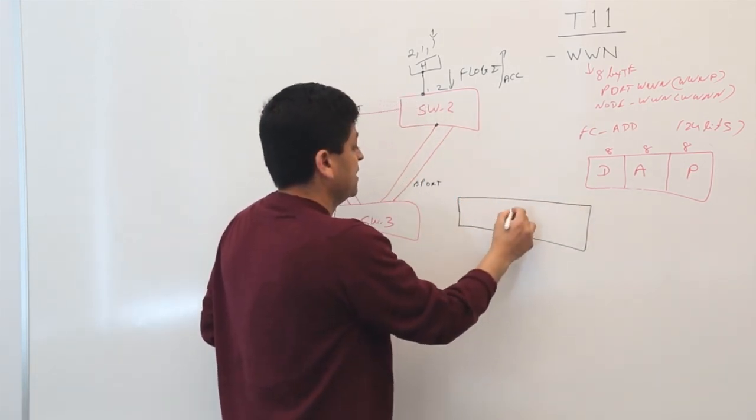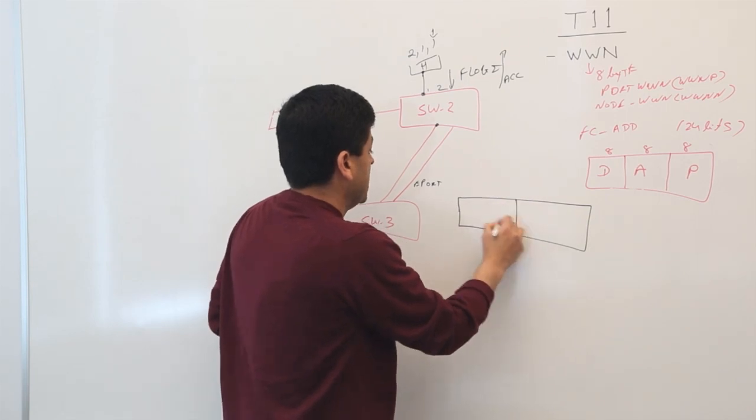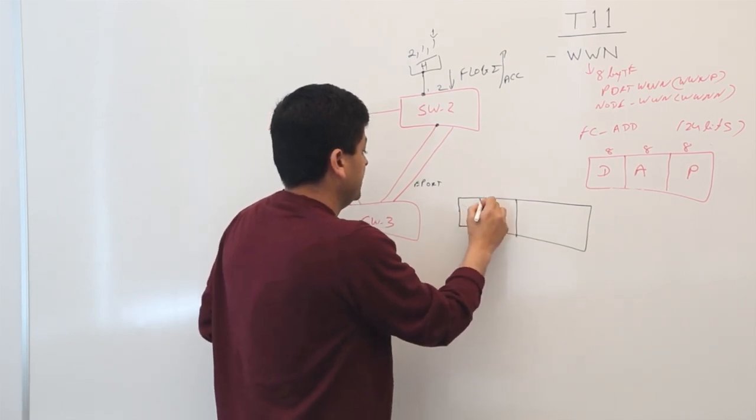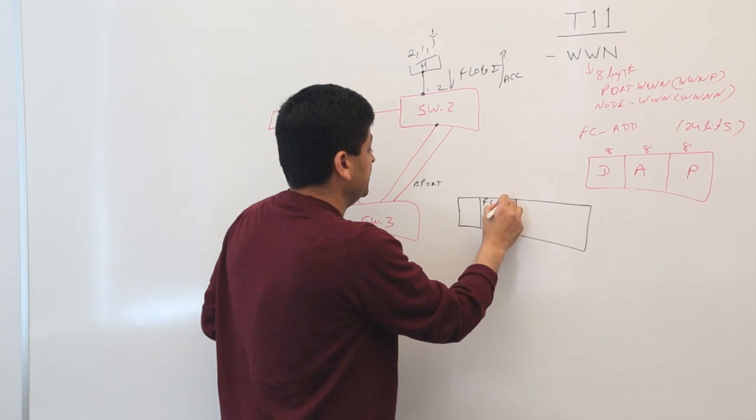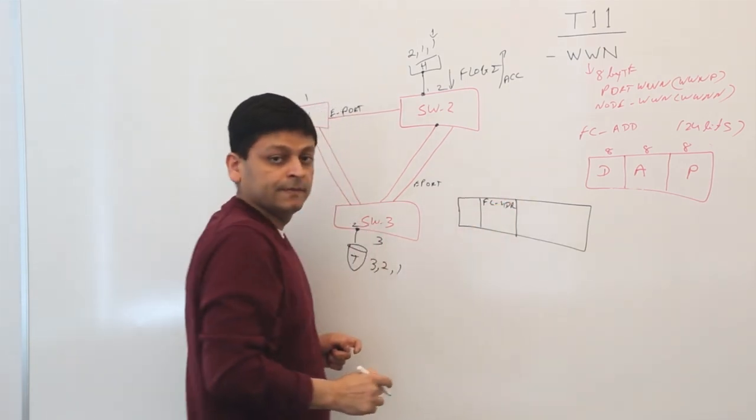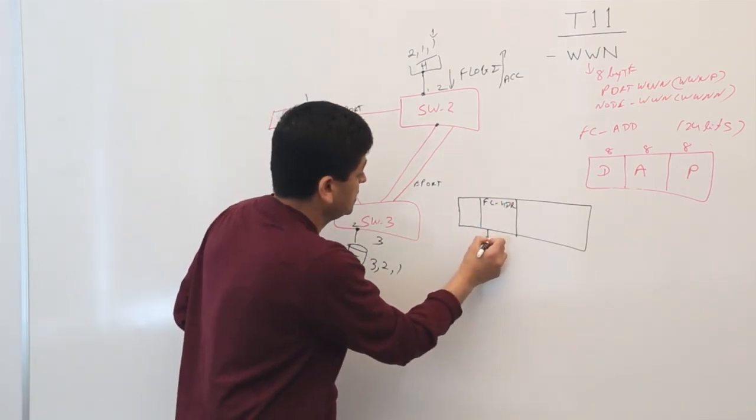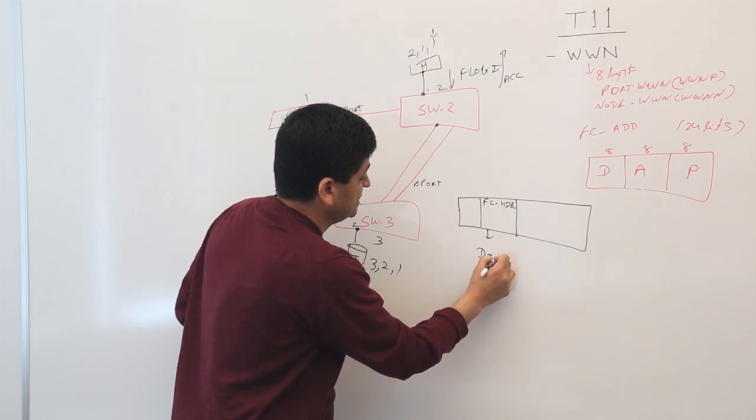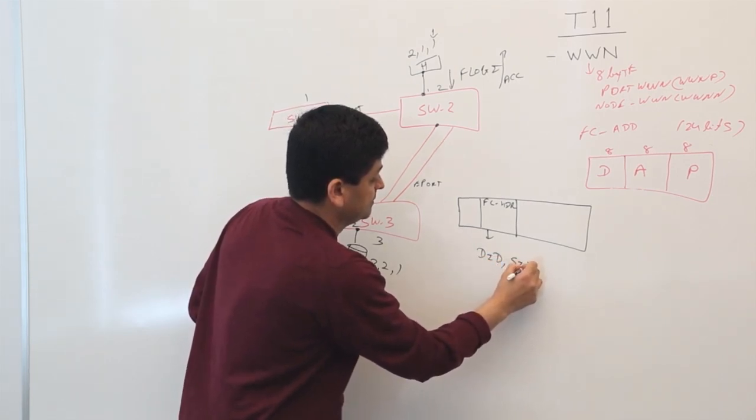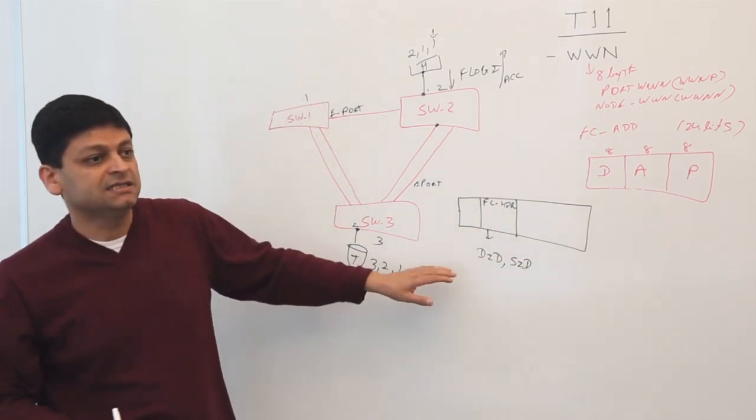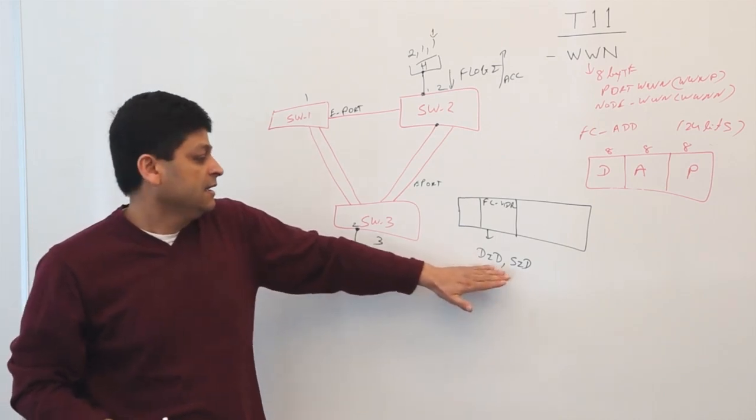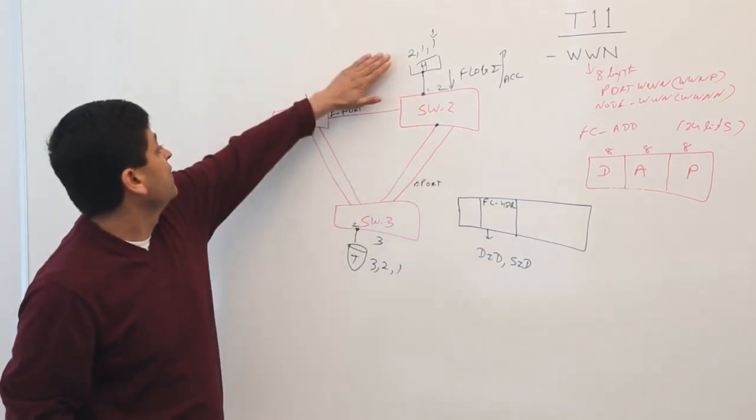As part of the FC header, I would have a DID and SID. What I mean by DID and SID is the destination ID and a source ID.